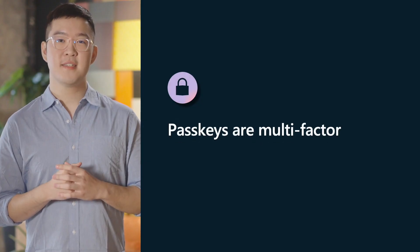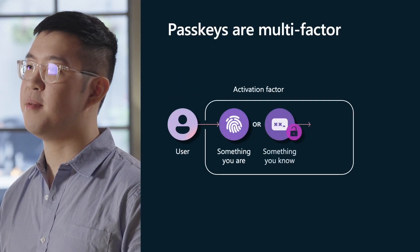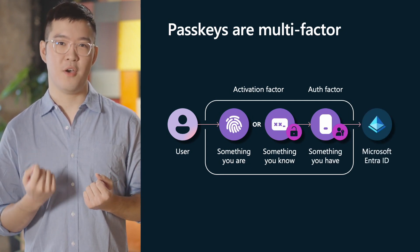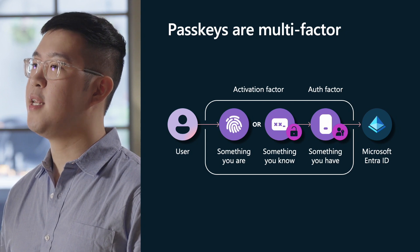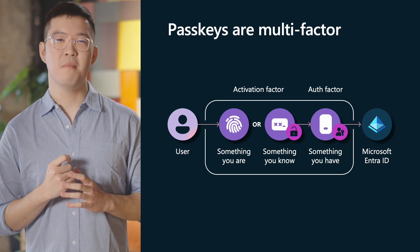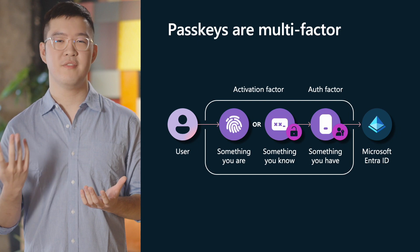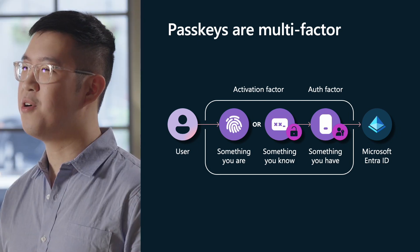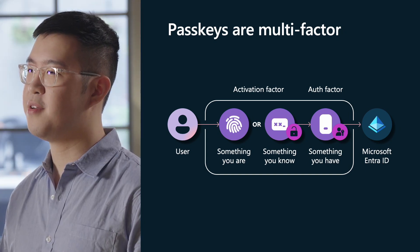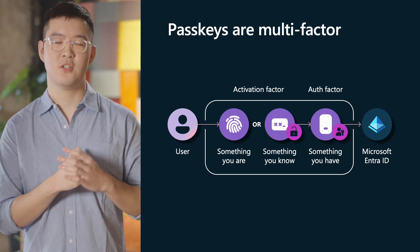First, passkeys are multi-factor by design. To authenticate using a passkey, the user must present something they have, along with something they are or something they know. The user's device containing the passkey is something they have. To sign in with the passkey, the user must either use their biometrics — something they are — or a device PIN, which is something they know. This forms the basis of secure multi-factor authentication, eliminating the need to pair together legacy, phishable sign-in methods like passwords with SMS to achieve MFA.